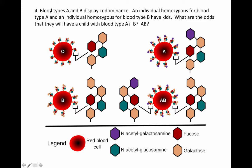The question here says blood types A and B display co-dominance. We have somebody who's homozygous for blood type A and somebody who's homozygous for blood type B, and we want to know what are the odds that their kids will have each different kind of blood type.